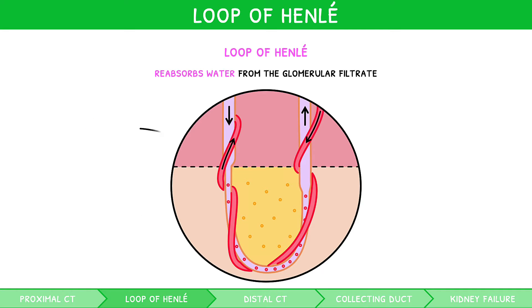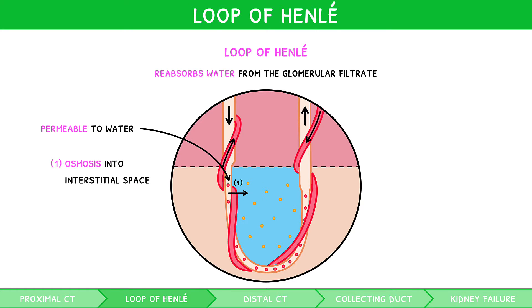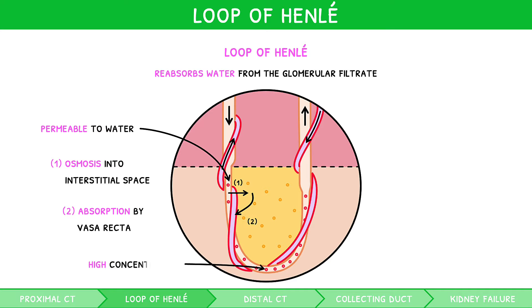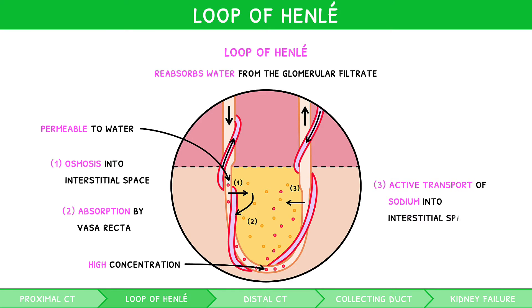Since the descending limb is permeable to water, water moves by osmosis into this interstitial space. One would think this dilutes the concentration gradient. However, as the vasa recta is so closely associated, water is immediately removed, preventing this. Having lost water, the fluid leaving the descending limb has a high solute concentration. It passes onto the ascending limb. Due to this high concentration, sodium ions are pumped from the filtrate into the interstitium, raising the solute concentration of the glomerular filtrate further.